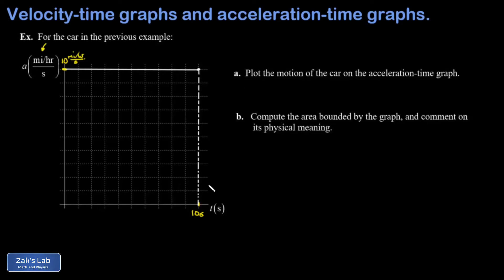And then in Part B, we're asked to compute the area bounded by this graph and then comment on the physical meaning of that area. So the area bounded by this graph is just the area of this square, but we need to be careful to keep the units here. And the height of the square is 10 miles per hour per second. And the width of the square is 10 seconds. When I compute the area, the seconds cancel, and this gives me 100 miles per hour.